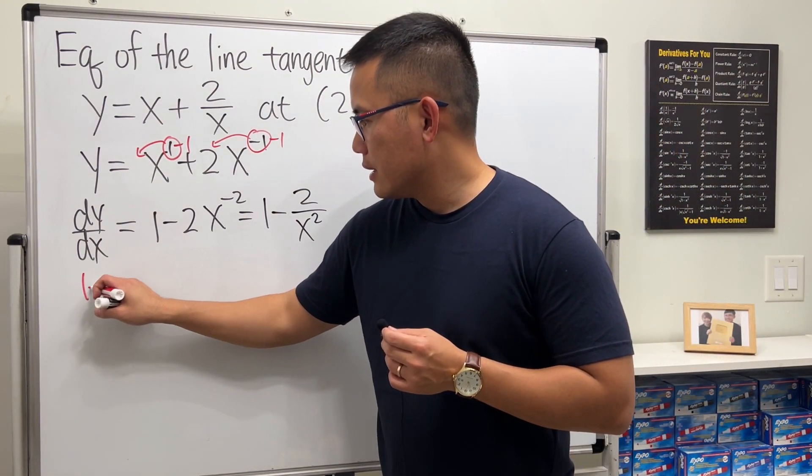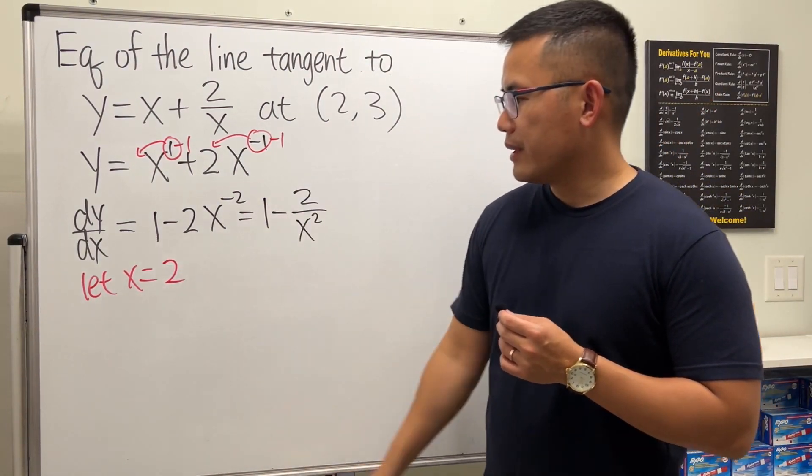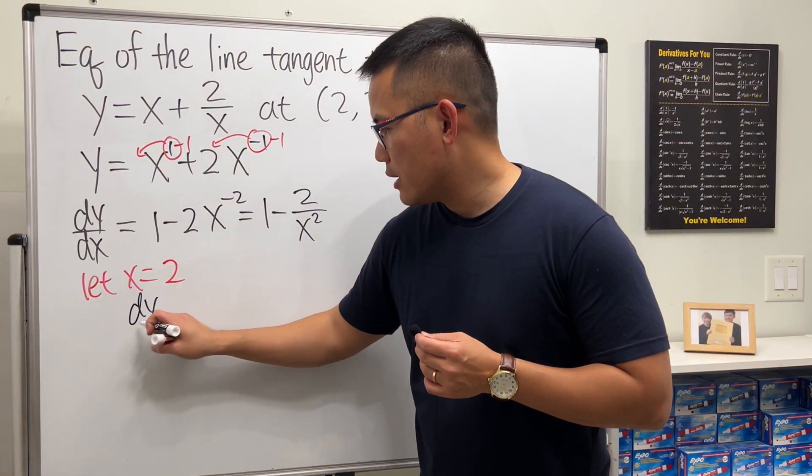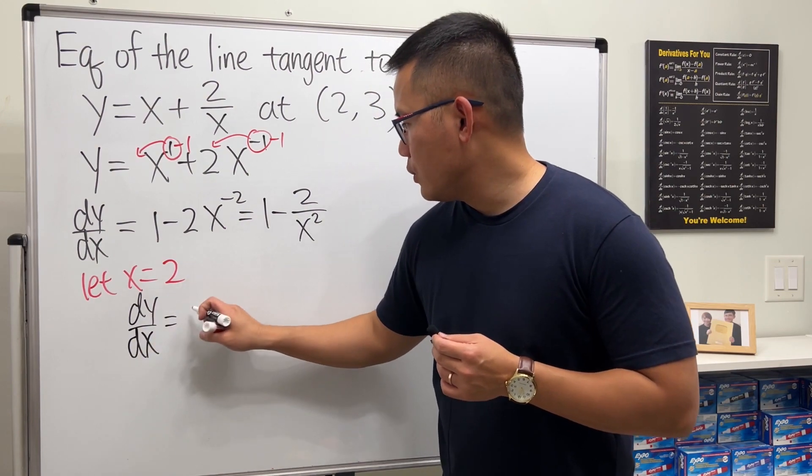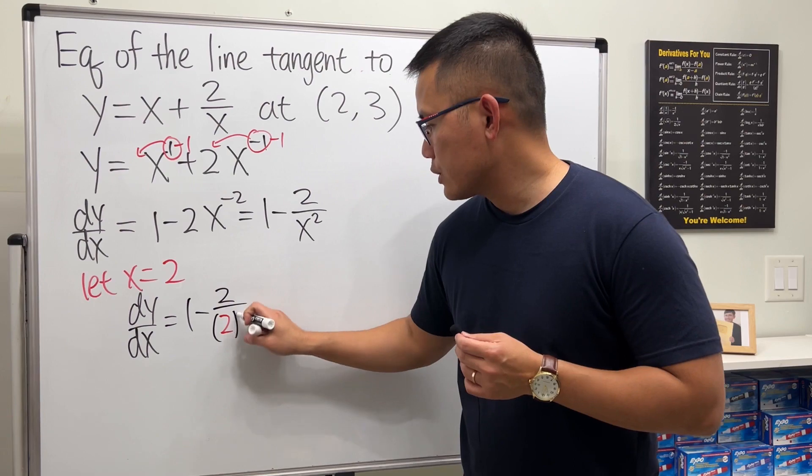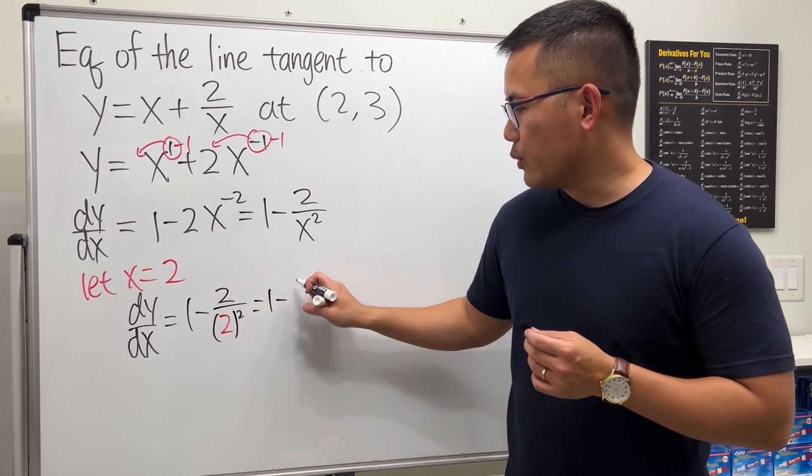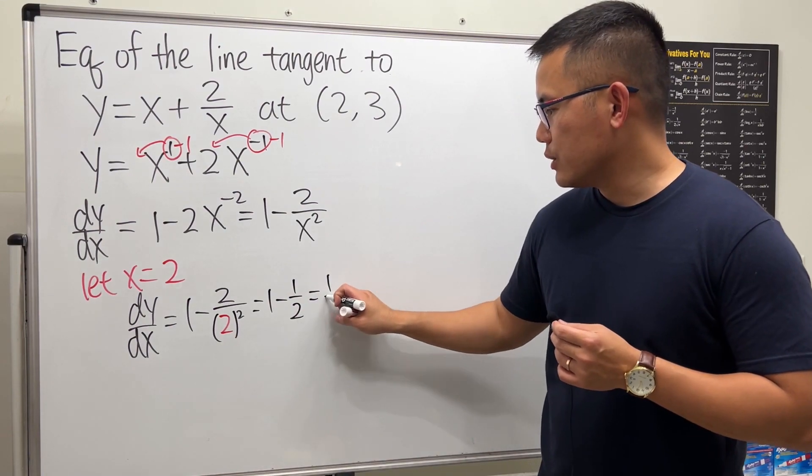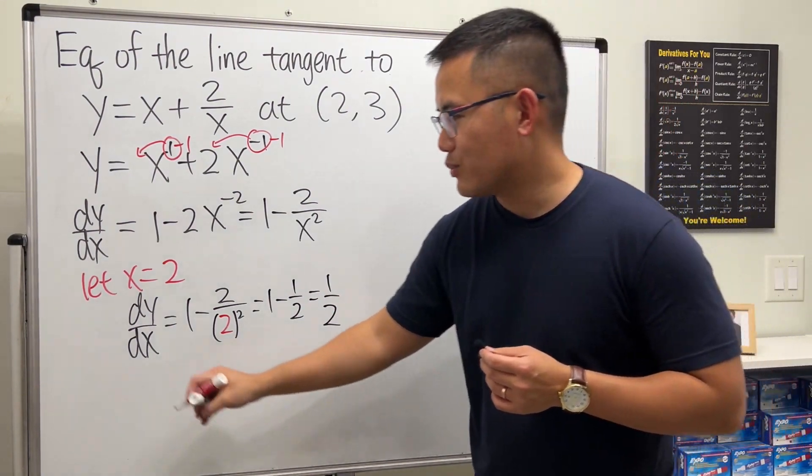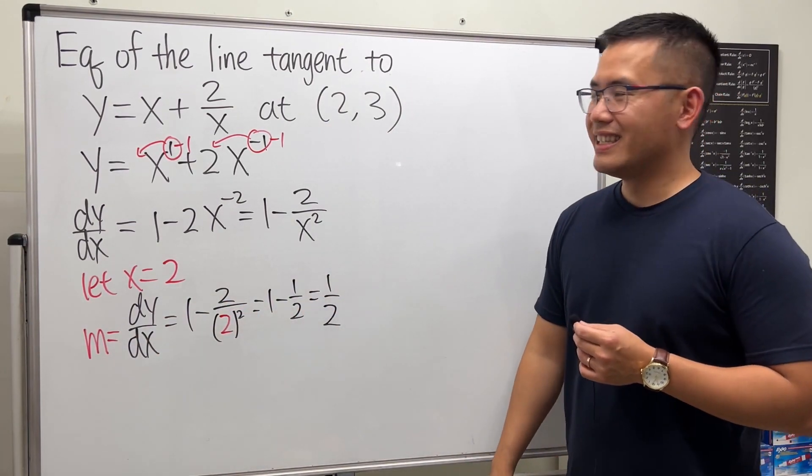We want the x value to be 2, so we let x = 2. dy/dx will be 1 - 2 over 2 squared. That's 1 minus 2/4, which is 1/2, so we get 1/2. This is the slope of the tangent line that we want.